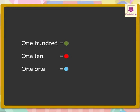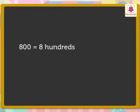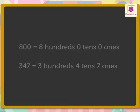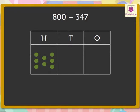Let us represent each hundred with a green dot, each 10 with a red dot, and each one with a blue dot. The number 800 has eight hundreds, zero tens, and zero ones. And the number 347 has three hundreds, four tens, and seven ones. So the number 800 will be represented like this with dots.